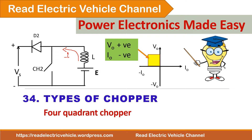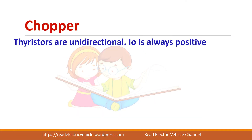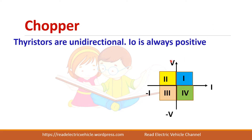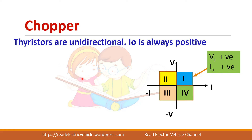Let us see about the different types of chopper. We have seen about choppers in the previous video. Thyristors are used in choppers — basically thyristors are unidirectional devices, meaning they carry current in one direction only. This is the voltage-current plane; there are four quadrants. A chopper can be made to operate in all four quadrants by changing the position of the switches.